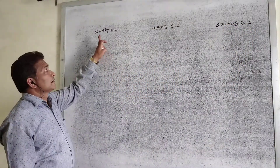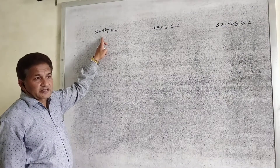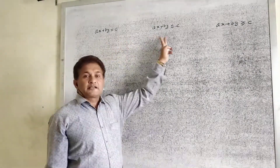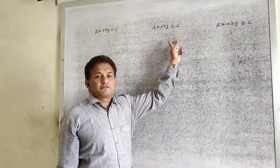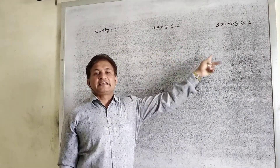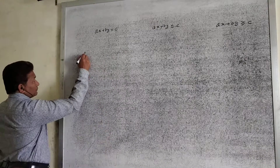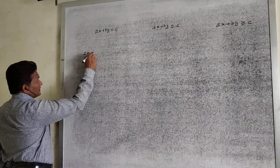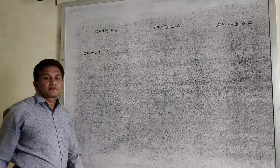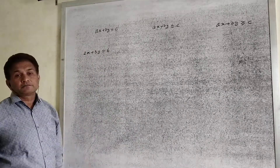First, we represent equations separately, and after that we find the graphical representation of inequalities. Let's see the example: 2x plus 3y equal to 6. This is a linear equation in this form.